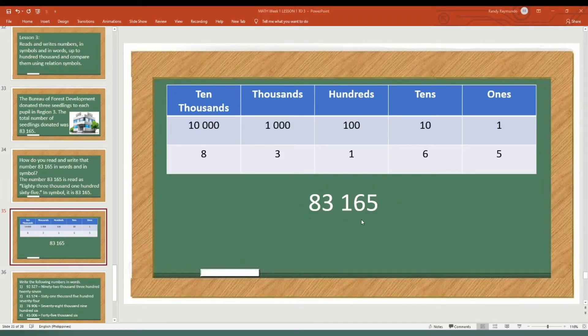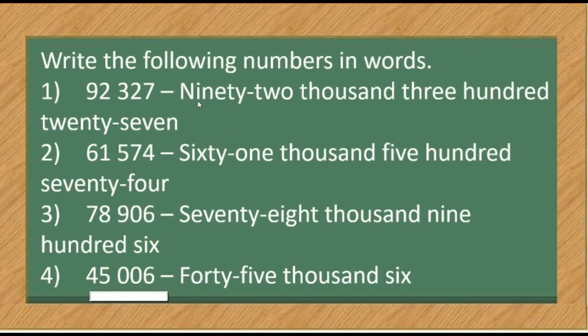Here is 83,165 written in the place value chart. There are 8 ten thousands, 3 thousands, 1 hundred, 6 tens, and 5 ones. So it is eighty-three thousand one hundred sixty-five.